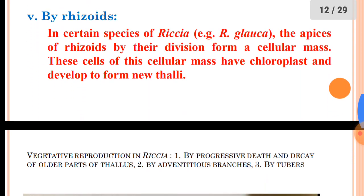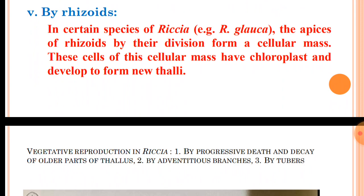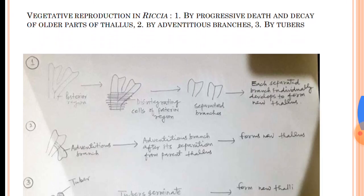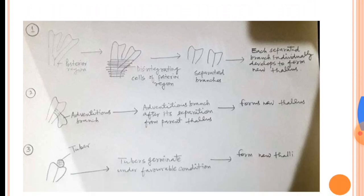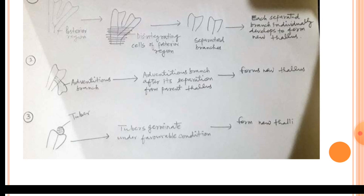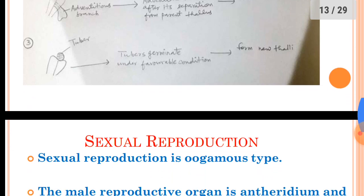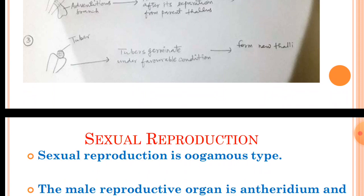The fifth method of vegetative reproduction is by rhizoids. In certain species of Riccia — for example, Riccia glauca — the rhizoidal apices form a cellular mass by their division. The cells of this cellular mass have chloroplasts and they develop to form a new thallus. This figure shows the methods of vegetative reproduction in Riccia: number one, death and decay of the older part; number two, formation of adventitious branches; and number three, formation of tubers in the apical region.